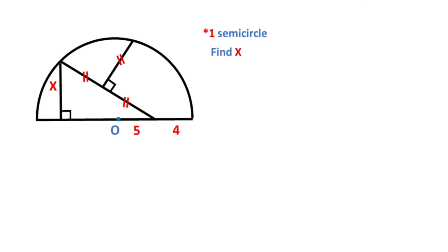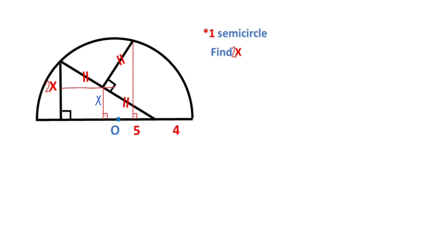First of all, let's draw a perpendicular line onto the diameter like this. Let's call here 2x because I don't want to deal with fractions. So here must be equal x because of the mid-segment. And then let's draw one more perpendicular line and one parallel line here.